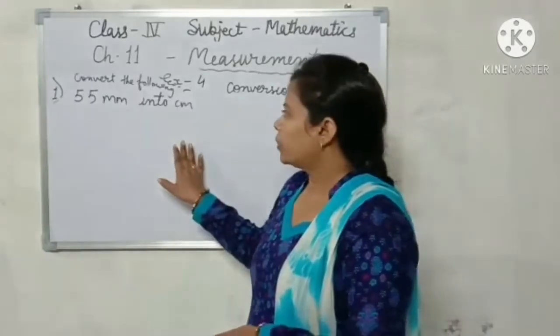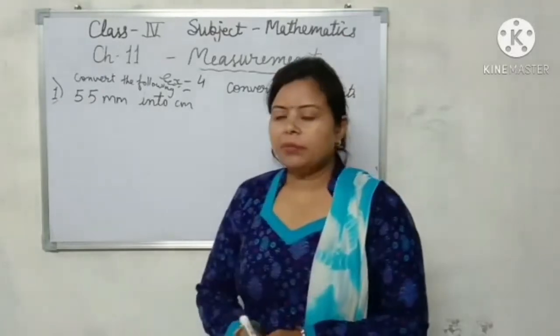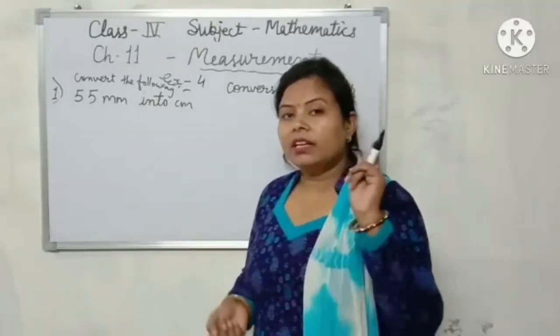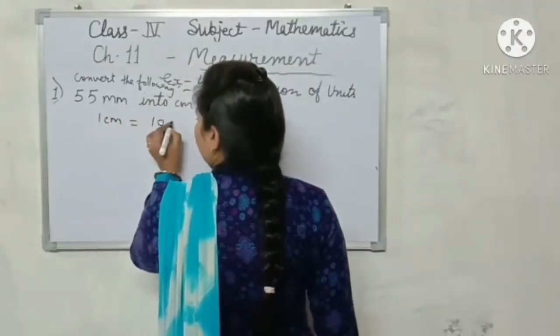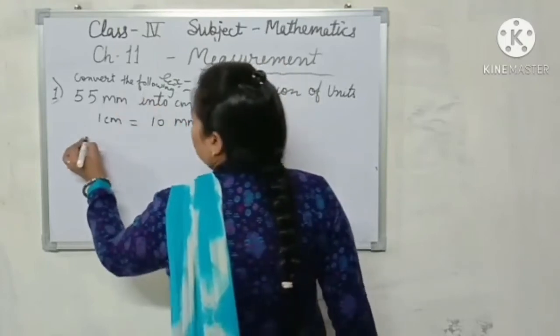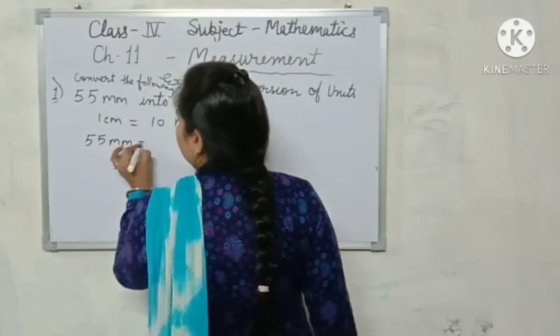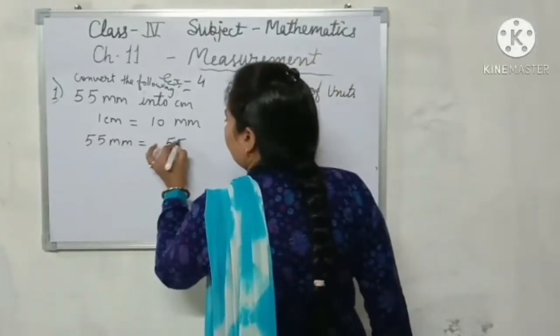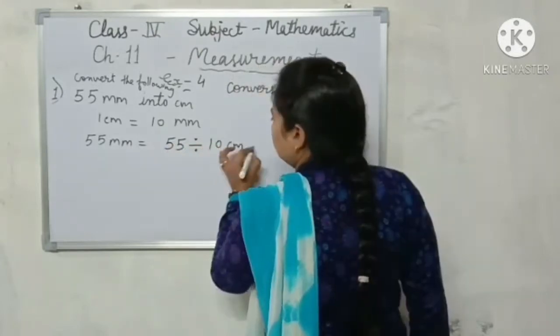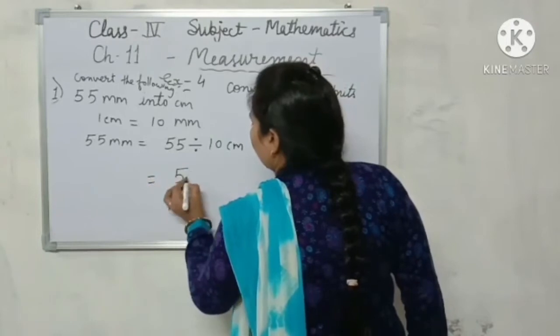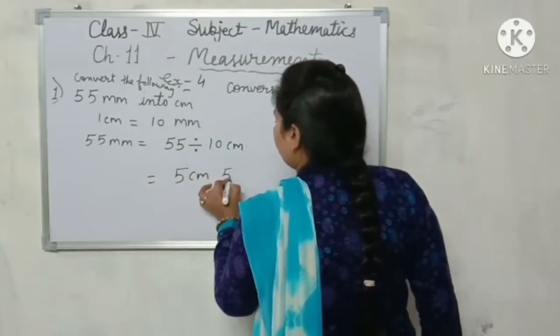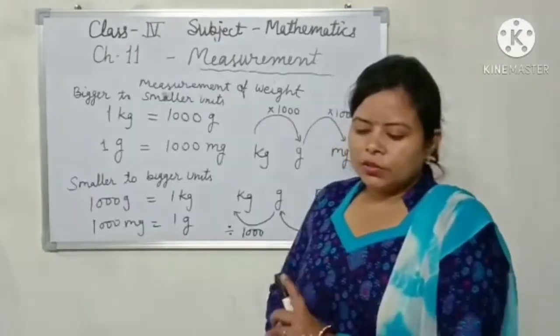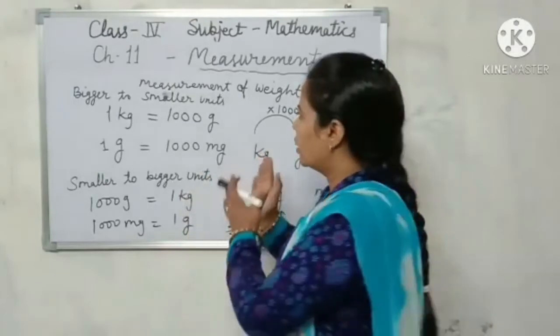Student, same way do 6 questions from this exercise. Exercise 4: Convert the following, 55 millimeters into centimeters. When we convert smaller unit to bigger, then we divide. 1 centimeter equals 10 millimeters. So 55 millimeters equals 55 divided by 10 centimeters. So the answer is 5 centimeters and 5 millimeters. Same way, do Exercise 4.